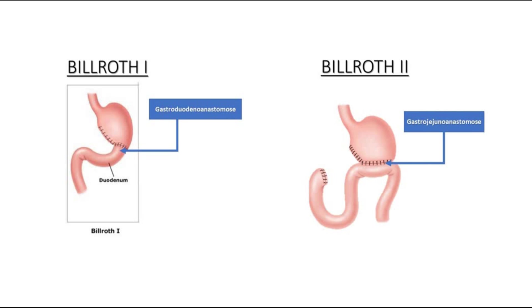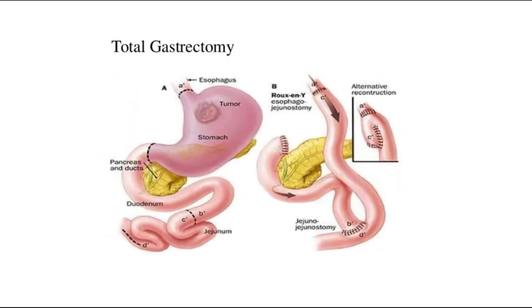Billroth II is a gastrojejunostomy, where the remaining part of the stomach is anastomosed with the jejunum. The third reconstruction option is Roux-en-Y oesophagojejunostomy, which is the preferred option after total gastrectomy.